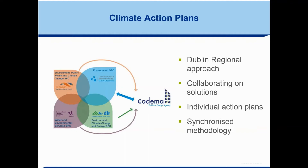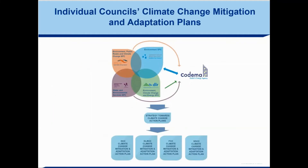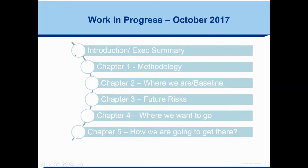A shared methodology makes sense because the four Dublin local authorities have the same kinds of risks and challenges right across the Dublin metropolitan area. This led to the current work: developing four climate mitigation and adaptation plans specific to each of the four Dublin local authorities. The work is well advanced - each of the four action plans broadly has five chapters plus an introduction, and it is the second chapter, the baseline emissions inventory, that is the subject of today's webinar.